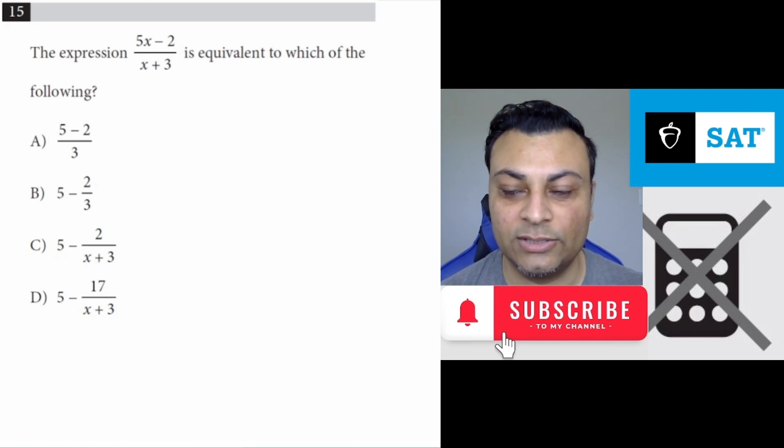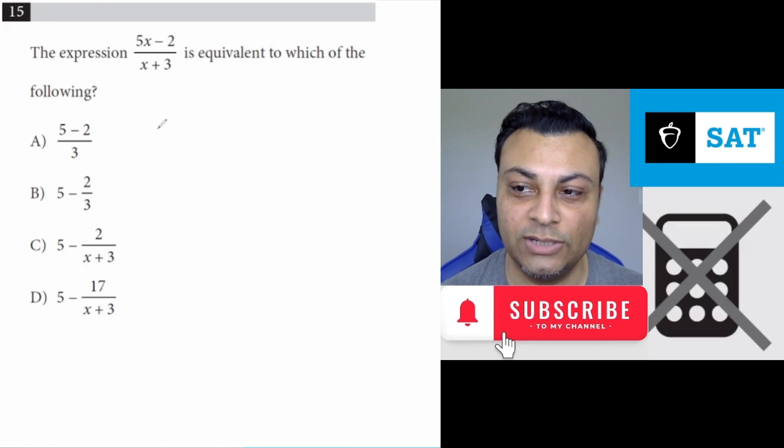Another way is to use synthetic division. And when you divide by x plus 3, you'll have to put negative 3 up in the air and write down the coefficients of this, which is 5 and negative 2.